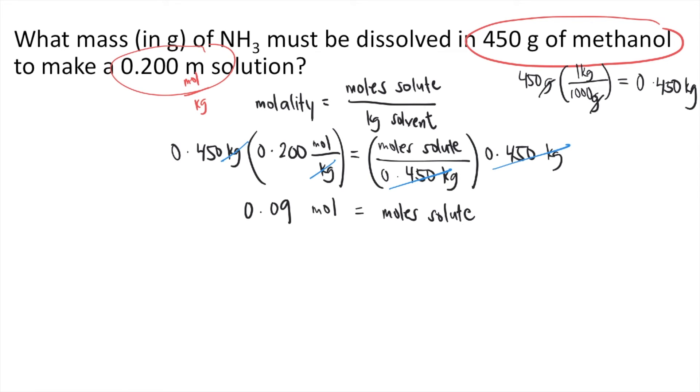But the problem is asking for the grams of ammonia. NH3 or ammonia is our solute. So to get the mass or the grams of ammonia, we need the molar mass of ammonia.